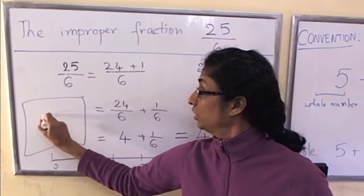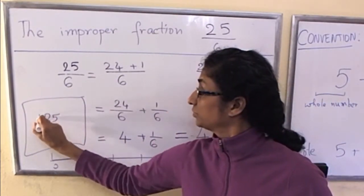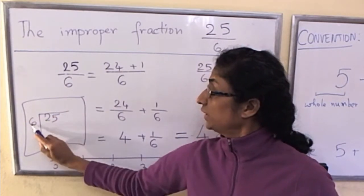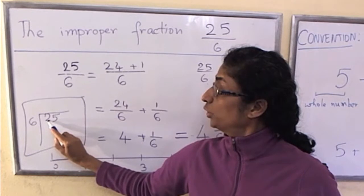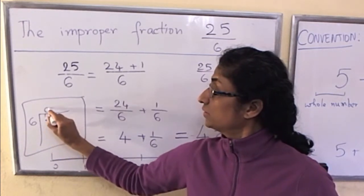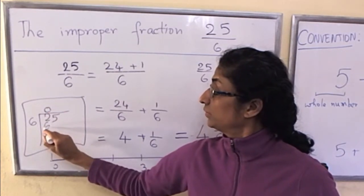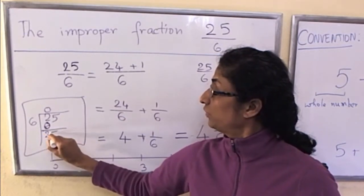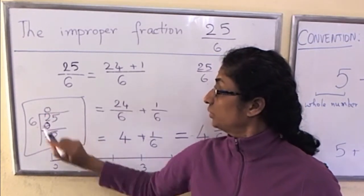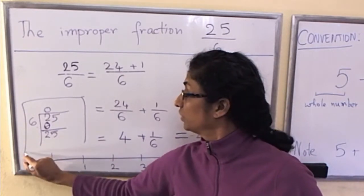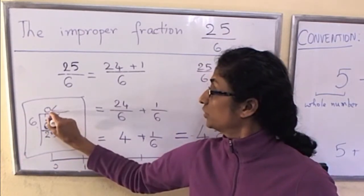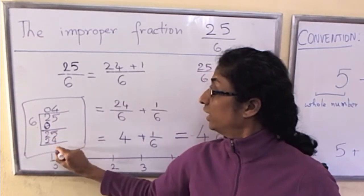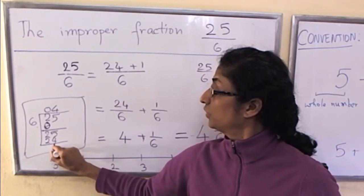If you prefer not to do it mentally, then you could also do long division. That's in fact really what's going on. So 25 divided by 6. 6 goes into 2 zero times, we write a 0. 6 goes into 25 four times. 6 times 4 is 24, with a remainder of 1.